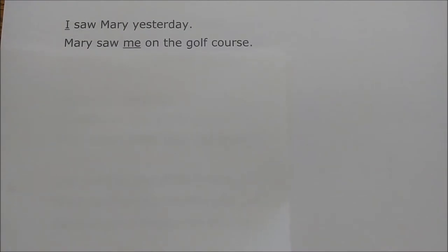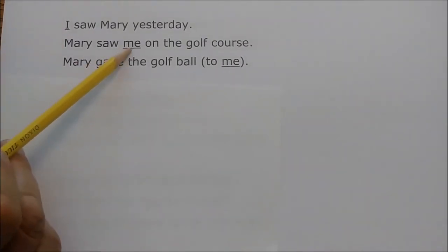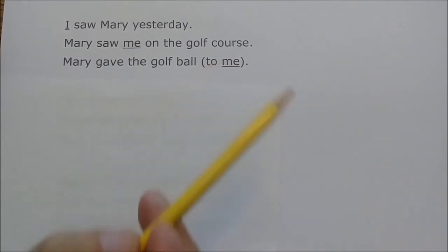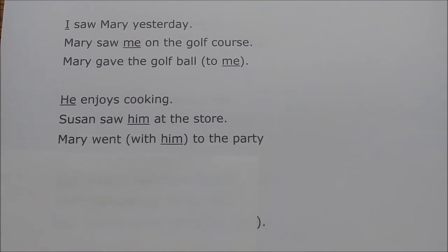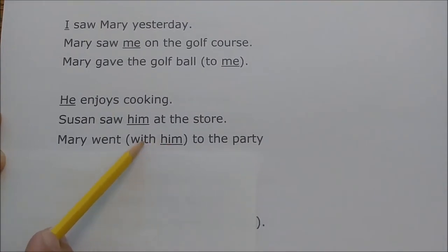'I saw Mary yesterday' — I is correct as the subject. 'Mary saw me on the golf course' — me is correct as the direct object. 'Mary gave the golf ball to me' — me is correct as the object of the preposition 'to.' Likewise: 'He enjoys cooking' — he is the subject. 'Susan saw him at the store' — him is the direct object. 'Mary went with him to the party' — him is the object of the preposition 'with.'